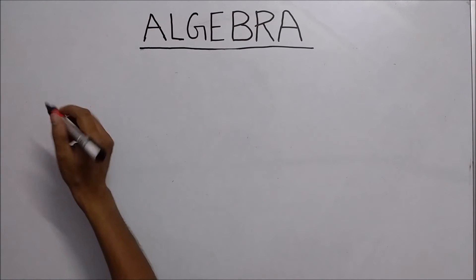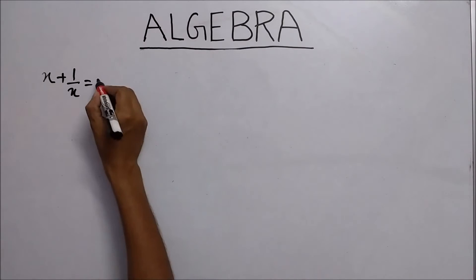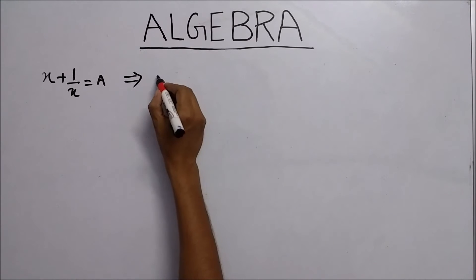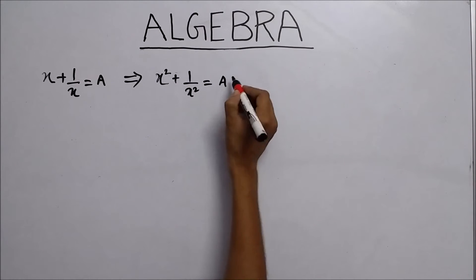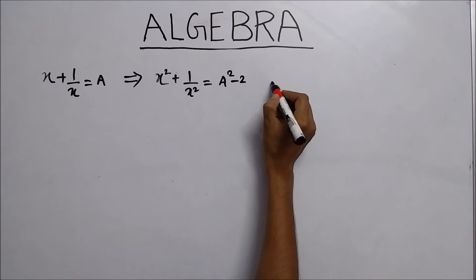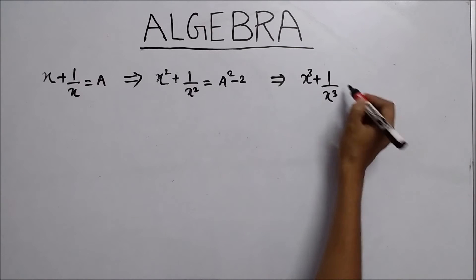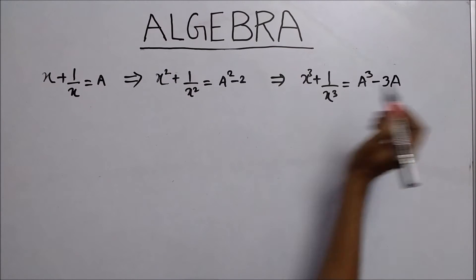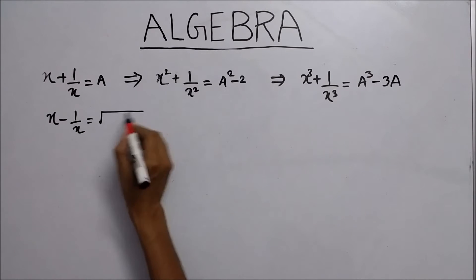First of all, whenever you see x plus 1 upon x is equal to a, then remember: x squared plus 1 upon x squared is always equal to a squared minus 2. Again, x cubed plus 1 upon x cubed always equals a cubed minus 3a. Similarly, x minus 1 upon x equals the square root of a squared minus 4.